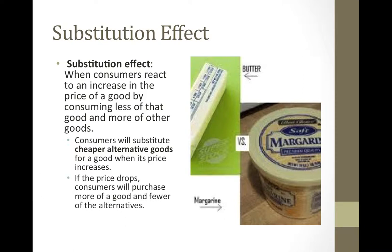If the price drops, consumers will purchase more of a good and fewer of the alternatives. Butter and margarine would be a good example. If the price of one became too expensive, the other is very similar, and if it was cheap enough, people would switch to that.